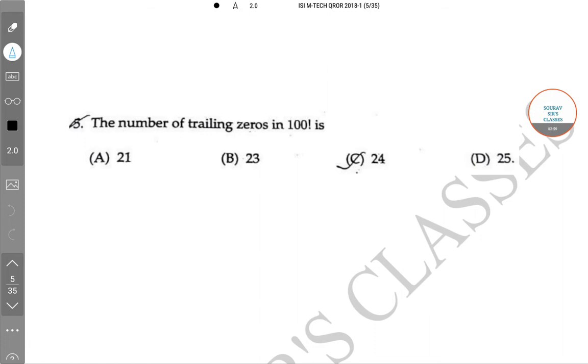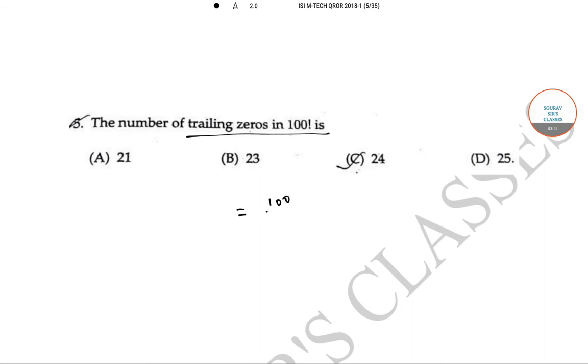The next question is, the number of trailing zeroes in 100 factorial is? So, the number of trailing zeroes in 100 factorial can be calculated as 100 by 5 plus 100 by 25 and you'll get this to be 20 plus 4. That is 24. So, the correct answer is option C.